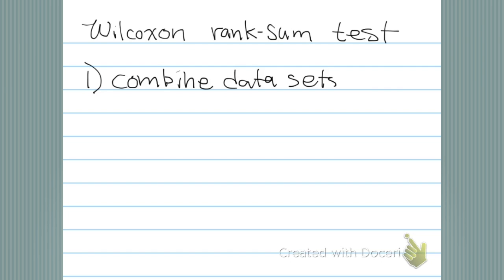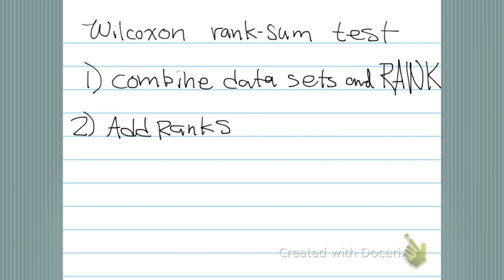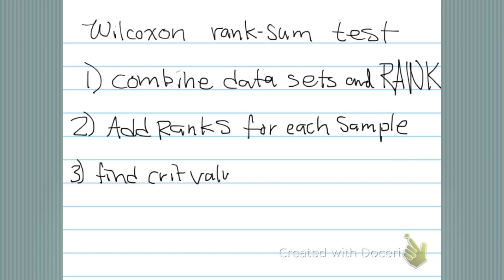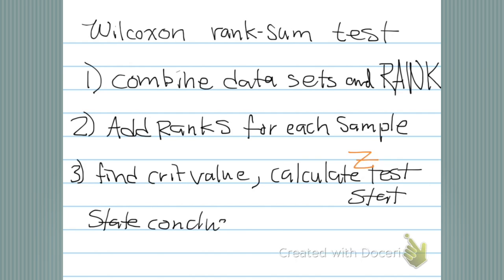The game plan: we're gonna combine data sets and rank them, then we add the ranks for each sample, find the critical values, calculate the test statistic, and state the conclusion of our hypothesis. Our hypothesis is that the medians are equal, and the alternative is that they're different.